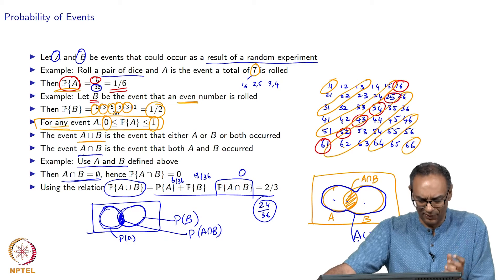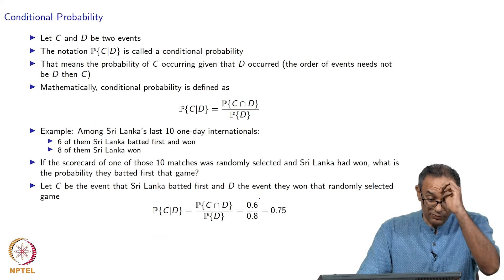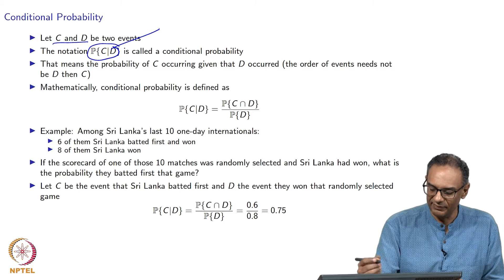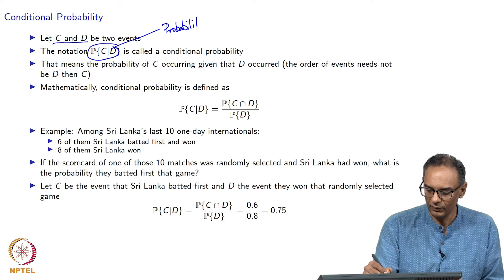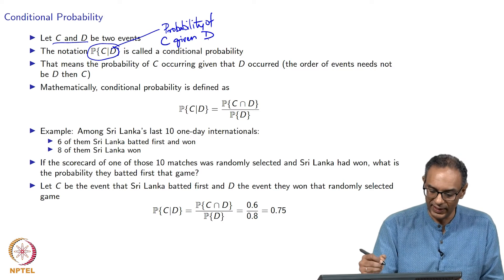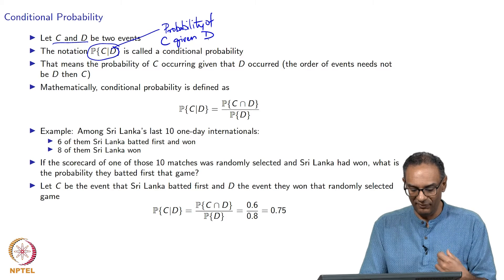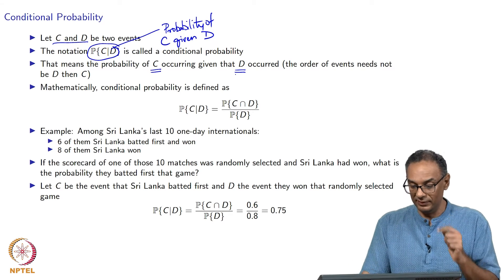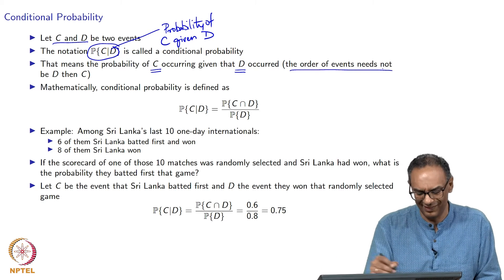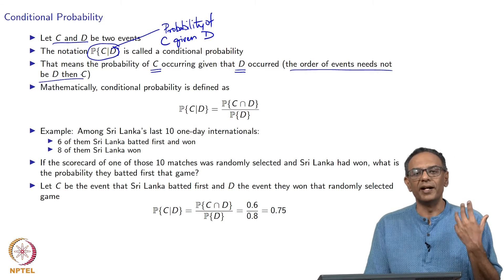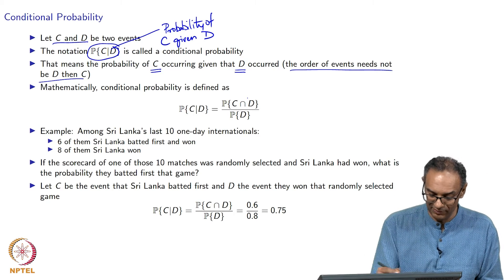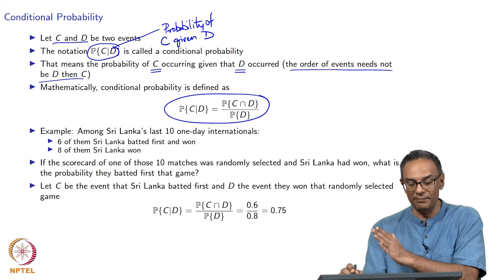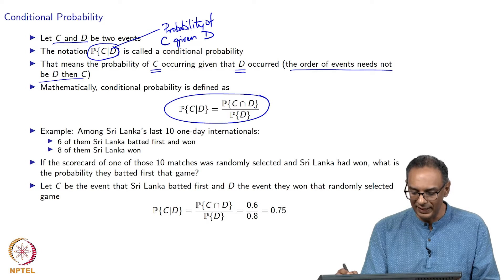That is how you get the probability of events. Next, we move on to the topic of conditional probability. We look at two other events, C and D. We write the notation P(C|D), read as 'probability of C given D.' It is called conditional probability — conditioned on the value of D being given. Mathematically, the conditional probability is defined as: the probability of C given D equals the probability of C intersection D divided by the probability of D.